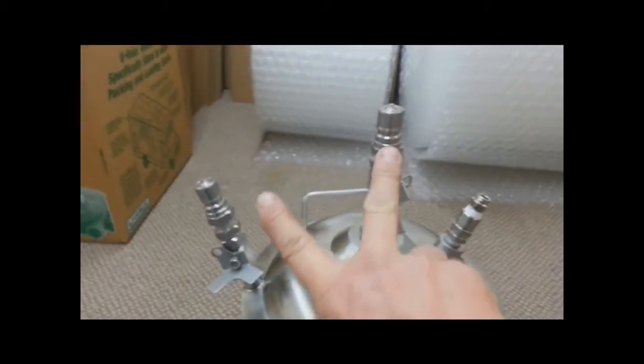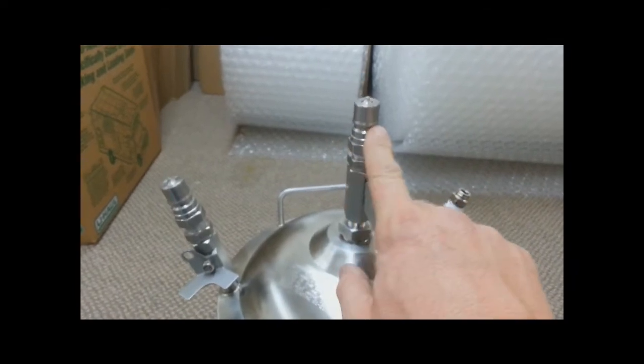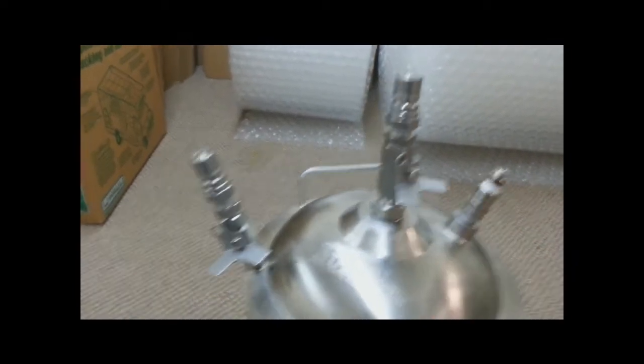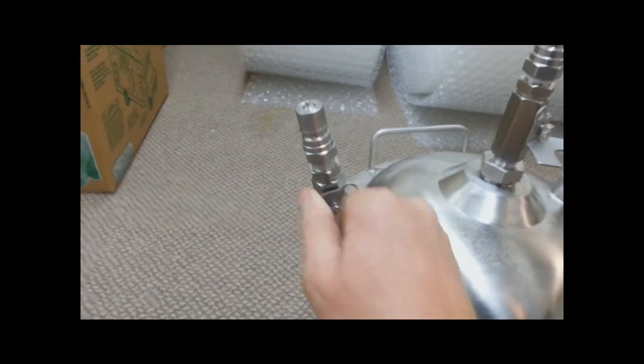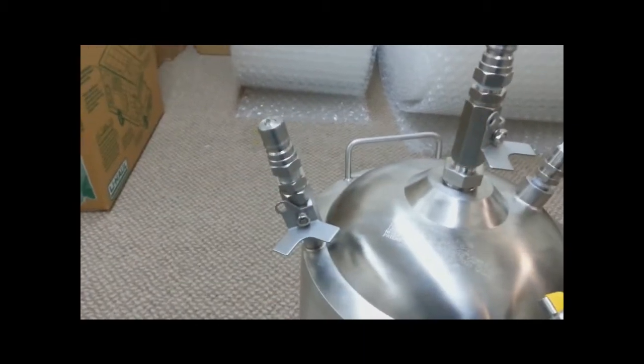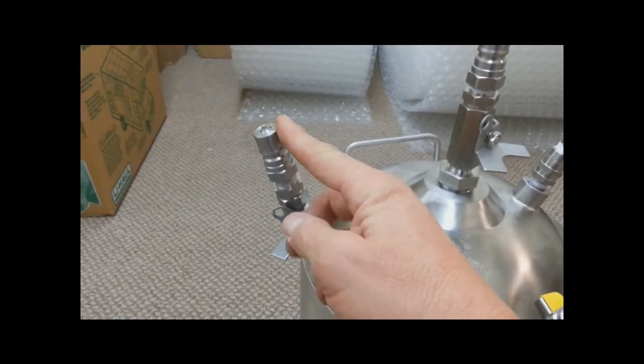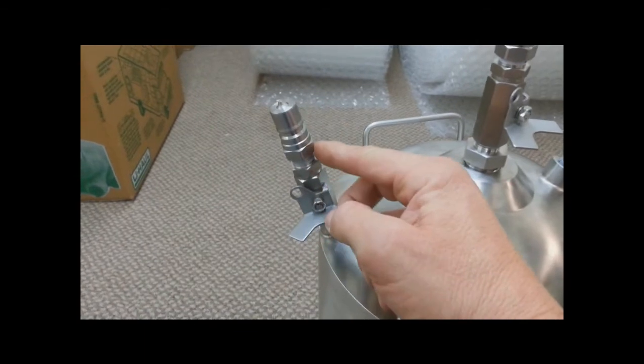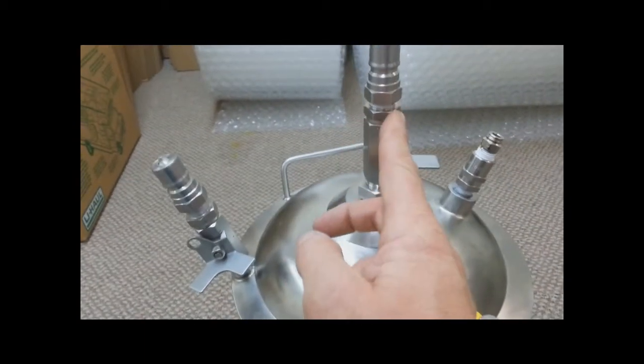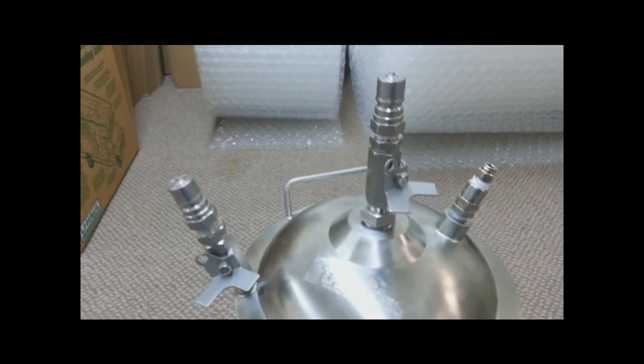And then you have two 3-8s connections. One that's a safety quick disconnect nipple with a ball valve, 3-8s, and another safety quick disconnect nipple with a ball valve that's also 3-8s. This is the safety quick disconnect nipple, and then this is the ball valve. And same here, ball valve, safety quick disconnect nipple.